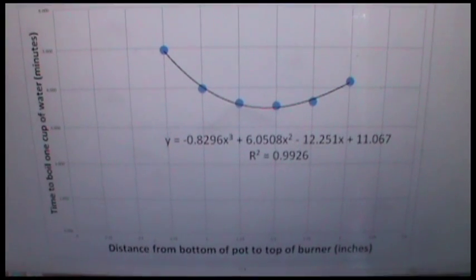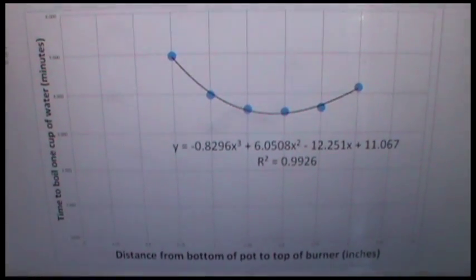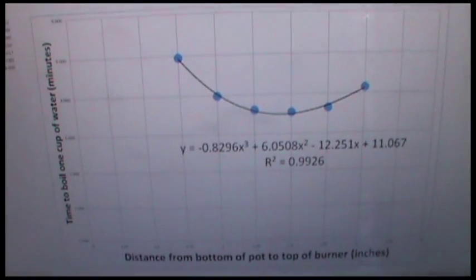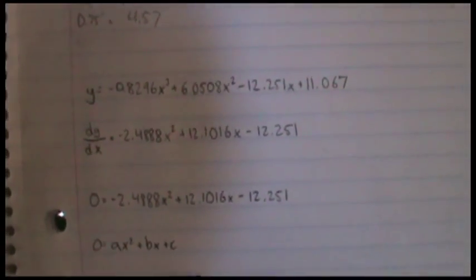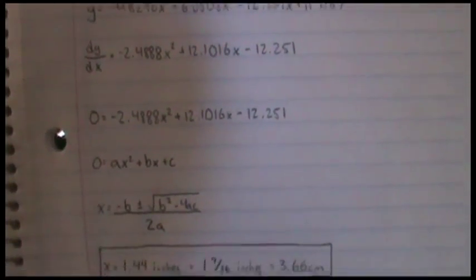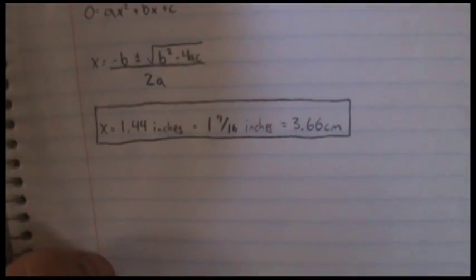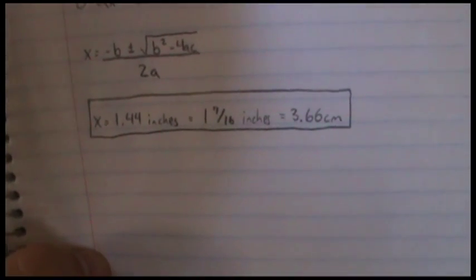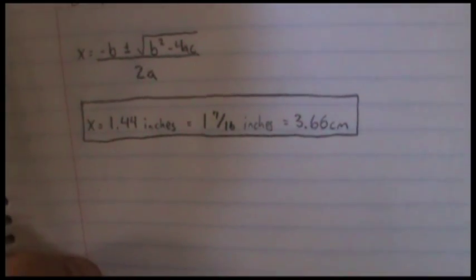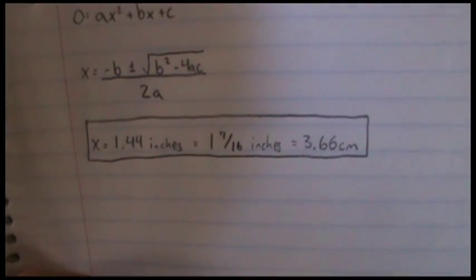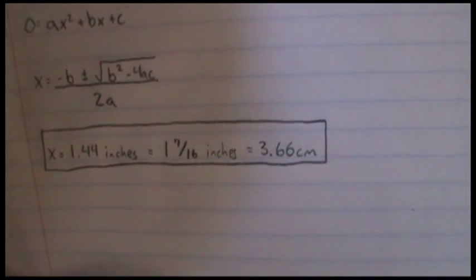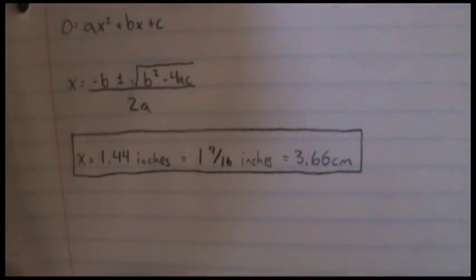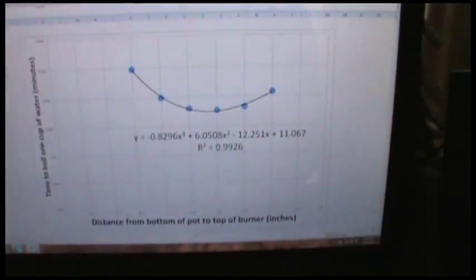Okay, as if this video couldn't get any more nerdy, we're going to throw the data here into Excel, and you see it plotted there, and I fit a third order polynomial through it. And then we can use a little calculus and algebra to determine what the optimum pot stand separation is from the bottom of the pot to the top of the Trangia burner. And we come up with 1.44 inches or 1 and 7 sixteenths inches, 3.66 centimeters.